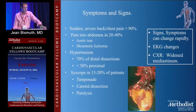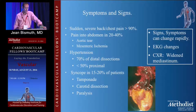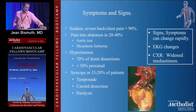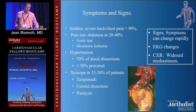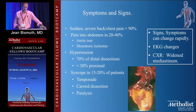Symptoms and signs: sudden, severe back and chest pain in 90% of patients. Pain into the belly despite it being a Type A — it extends all the way down — so you can have mesenteric ischemia and so on. Hypertension in 70% of the distal dissections, less than 50% of the proximal ones. Syncope in 15 to 20% of patients with tamponade, carotid dissection, and paralysis.